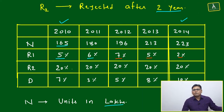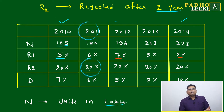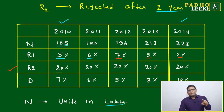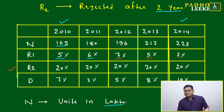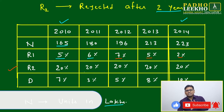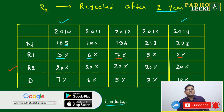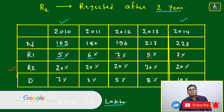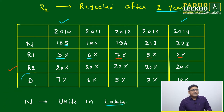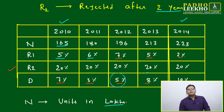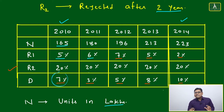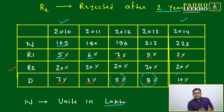R2 = 20% for all years because this depends on the type of product — for one type of product it stays almost the same. After two years, 20% of the units become obsolete. D (damage percentage): 2010 = 7%, 2011 = 3%, 2012 = 5%, 2013 = 8%, 2014 = 10%. I have given a very simple table — 5 values in absolute numbers and 15 values in percentage.